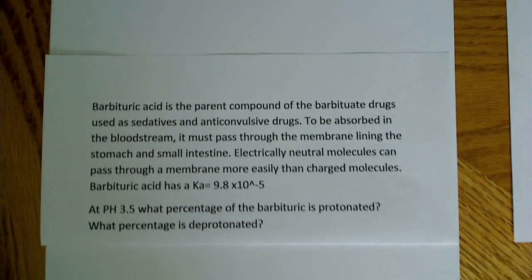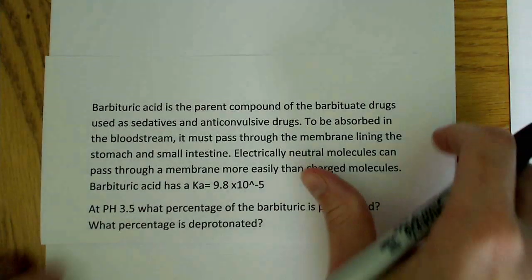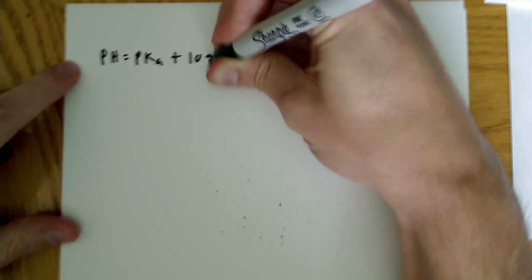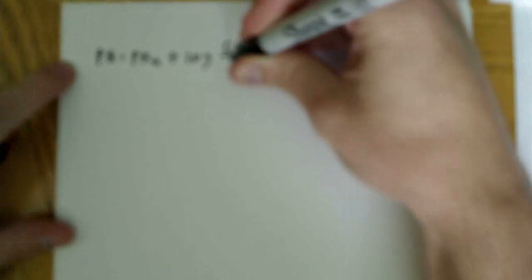Okay, so the first thing I like to do is write down the information we have and the equation I'm going to be using. So, the Henderson-Hasselbalch equation says the pH is equal to the pKa plus the log of the concentration of deprotonated barbituric over protonated.